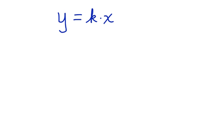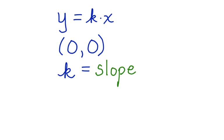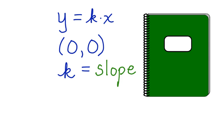When graphing a direct variation, it will always go through 0, 0, and k can be the same as the slope. Take a minute to write all this down in your notebook. Then you can use these things to solve direct variation problems.